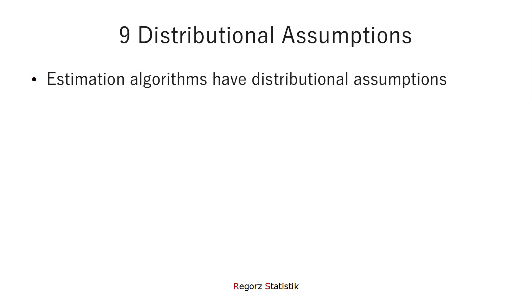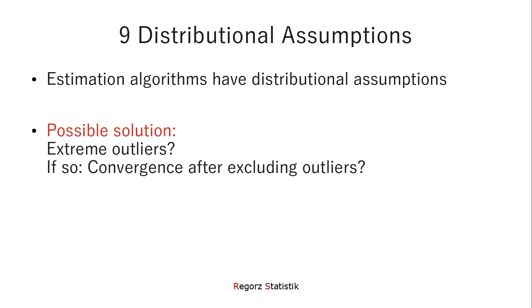And the last source I will talk about: distributional assumptions. Estimation algorithms have distributional assumptions. And if those assumptions are violated, that can lead to estimation problems. You should check especially for outliers, for extreme outliers. And if you have extreme outliers, try to run your model without the extreme outliers. Maybe then your model will converge.